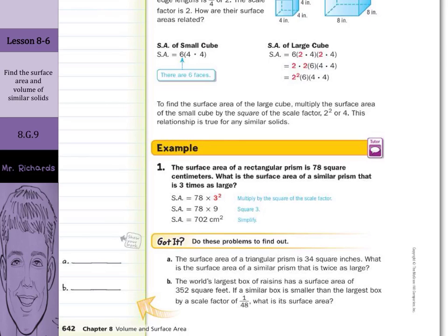So in our guided example A, the surface area of a triangular prism is 34 square inches. What is the surface area of a similar prism that is twice as large? Well, surface area is going to equal that original 34 times twice as large. Well that's 2, but we're going to square it. So surface area is going to equal 34 times 4. So surface area equals 136 and our units 136 inches squared.